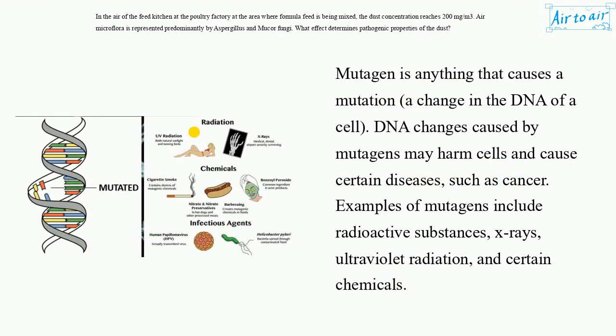A mutagen is anything that causes a mutation — a change in the DNA of a cell. DNA changes caused by mutagens may harm cells and cause certain diseases, such as cancer. Examples of mutagens include radioactive substances, x-rays, ultraviolet radiation, and certain chemicals.